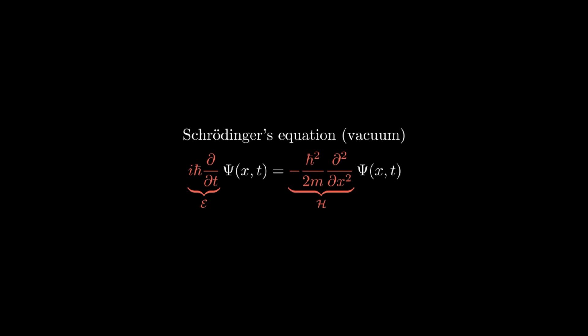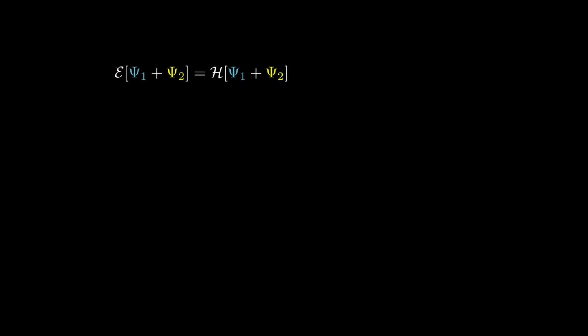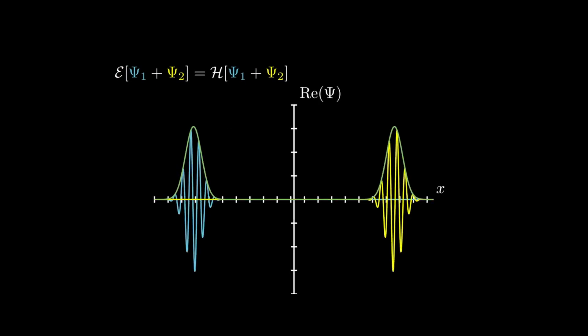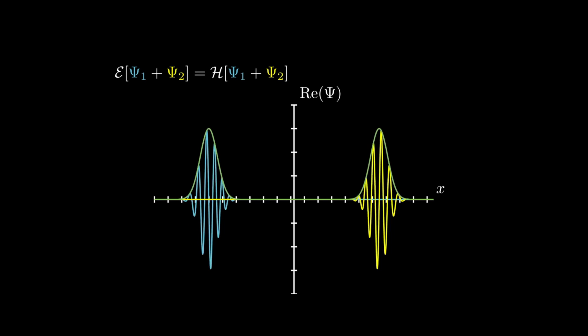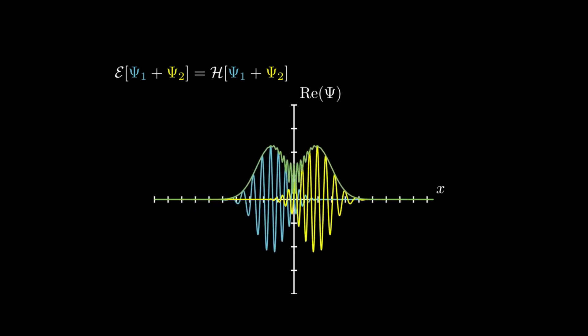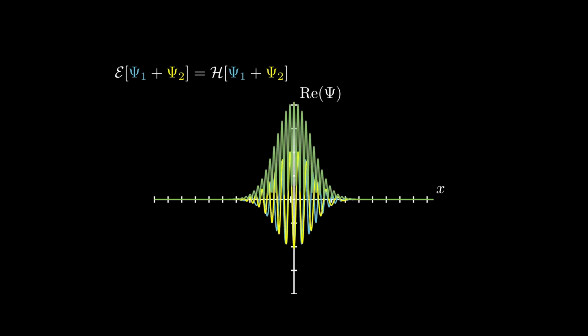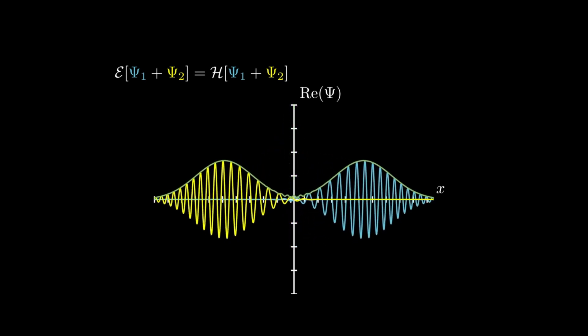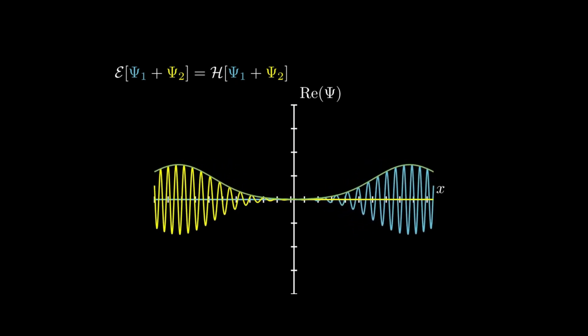So we could write this very abstractly as E psi equals H psi, where both of these things are linear operators. And we know right away that the solutions to this equation will add together to form other solutions. In particular, the solutions to this equation turn out to be complex valued traveling waves. And the addition of these complex amplitudes forms this famous interference fringe pattern from quantum mechanics. And the point is that we can start to understand how solutions will behave without worrying about the details of the solutions themselves.